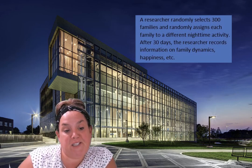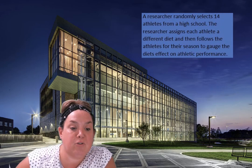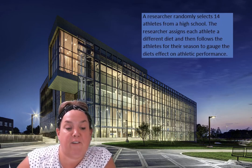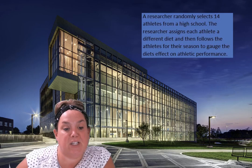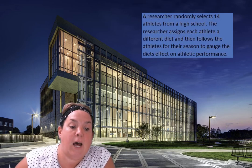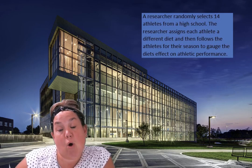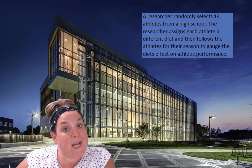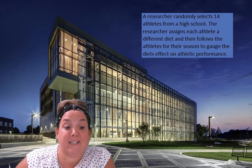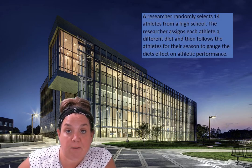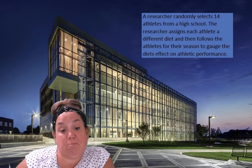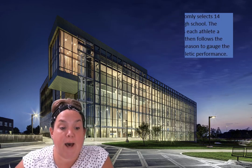Next: a researcher randomly selects 14 athletes from a high school. The researcher assigns each athlete a different diet and then follows the athlete for their season to gauge the diet's effects on athletic performance. It is being assigned. It doesn't say it was randomly assigned, but that doesn't matter because the researcher is actually doing something — affecting change in the participant — and that makes it an experiment.